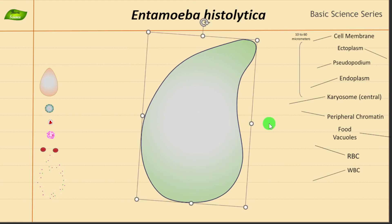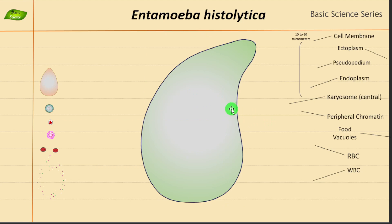If you talk about the size and shape of this organism: the trophozoite is the motile form and the cyst is the non-motile form. For motility, it needs some structure or functionality — it uses pseudopodia. These are structures I'll show you shortly. But let's talk about the size: it is around 10 to 60 micrometers, which is a huge range.